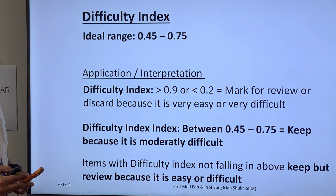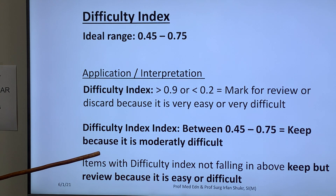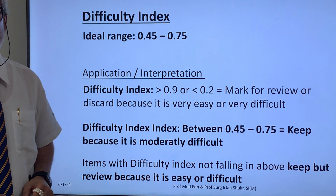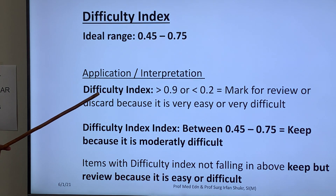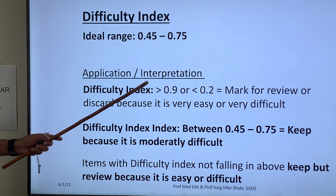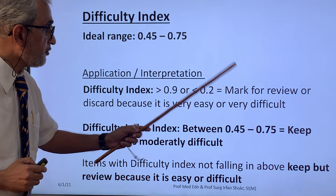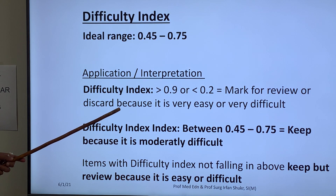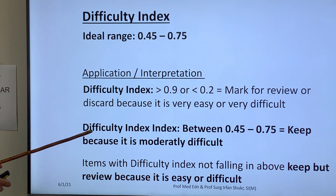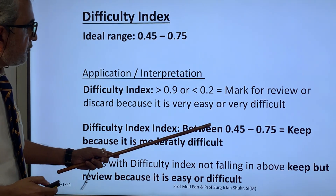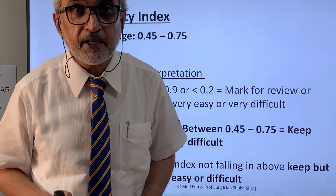About difficulty index — please memorize. The ideal range is 0.45 to 0.75. Scores are interpreted from 0.000 to 1.000. If the difficulty index is more than 0.9 or less than 0.2, kindly mark that question for review or discard, because it is either very easy or very difficult. If the difficulty index is between 0.45 and 0.75, keep this question because it is moderately difficult.